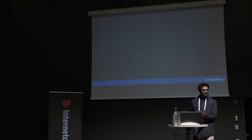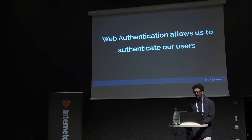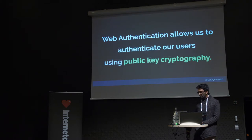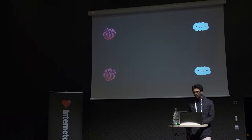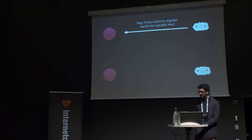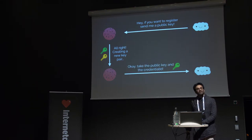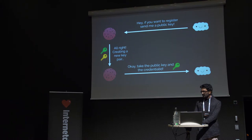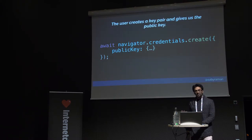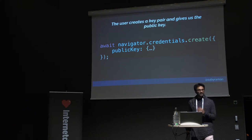So what is WebAuthn? It allows us to authenticate users using public key cryptography. At a high level, during registration, a server says: send me a public key. An authenticator like Touch ID, Windows Hello, or a YubiKey generates a new private-public key pair. The private key stays on secure hardware, and the public key is sent to the server along with a credential ID used to refer to the credential key pair later on. On the front end, you use the navigator.credentials.create function, pass in some configuration, and a new key pair is created.